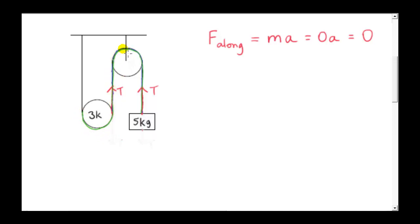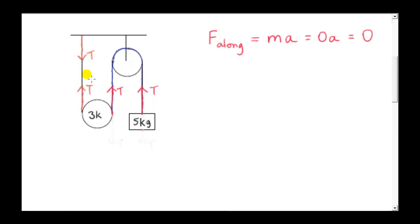In a similar way, we look at the green section of string. The green section ends at the point where the string just meets the three kilogram pulley. Applying the same reasoning, the force on this end is T down, so the force at the other end must be T up, because the green section has no mass. Indeed, we can say the force up at the ceiling has magnitude T, and the tension is the same throughout the entire string.